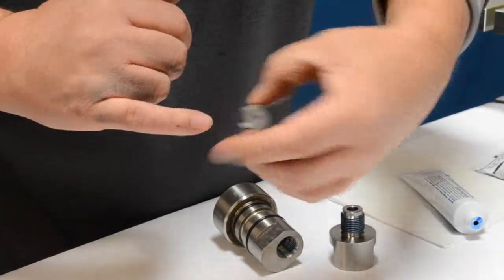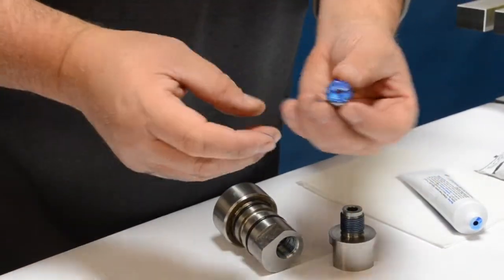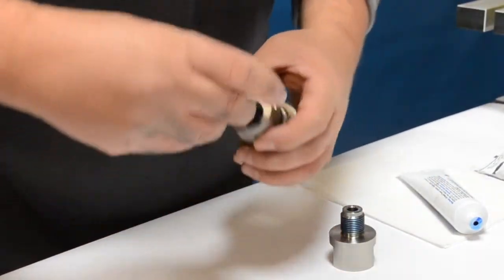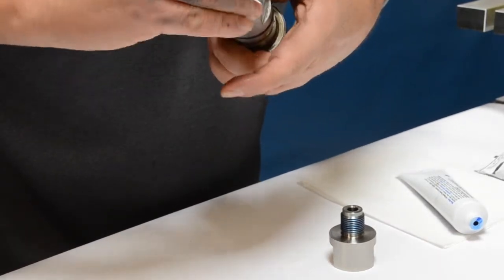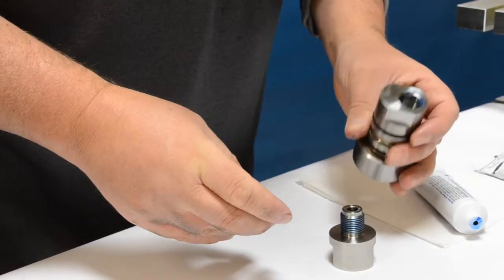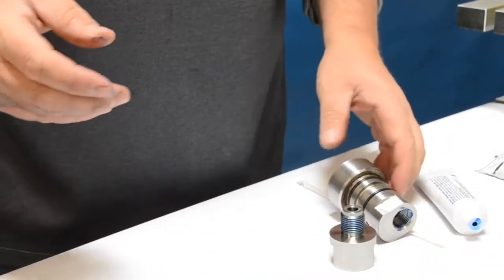Go ahead and insert the high pressure seat, blue goop face in first. Use your finger and push that all the way in and set that aside for now.